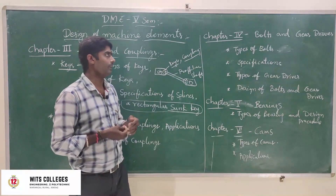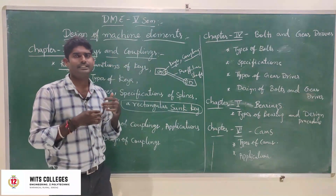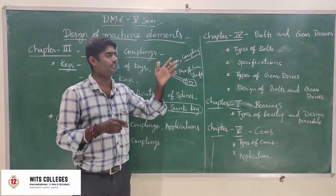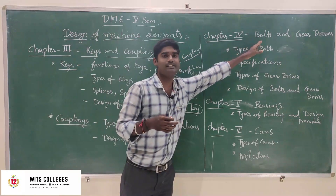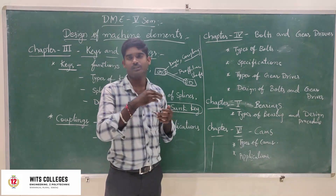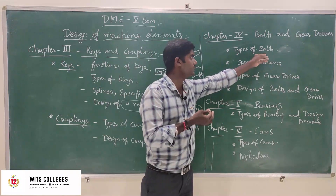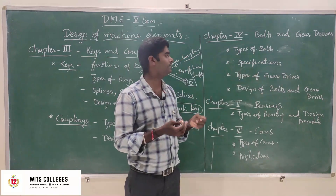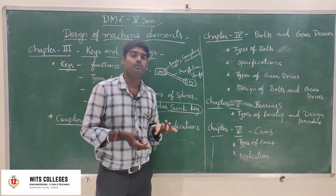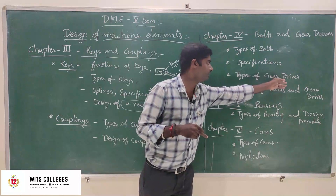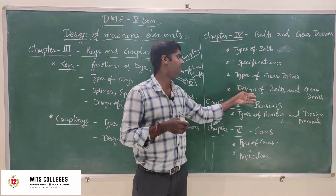Chapter 4: Belts and Gear Drives. These are all transmitting elements — energy transmitting elements — like shaft, keys, couplings. Belts and nuts are joining elements. If you want to transmit power, we use belts. Gear drives also transmit power from one machine element to another. In this gear drive: types of belts, specifications, and types of gear drives — such as helical gears, compound gears, and other important types. Design of belts and gears.